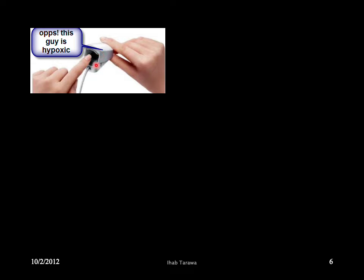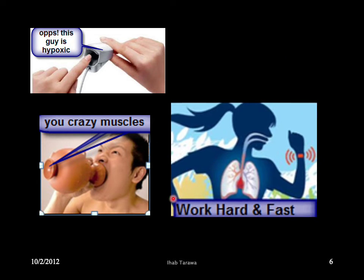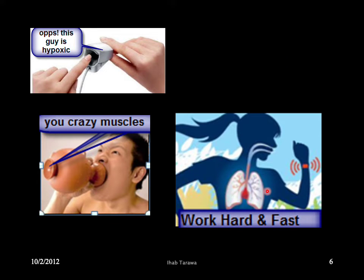One of the ways we monitor is to put a pulse oximeter. So whenever there is hypoxia, the sensor will go off — signaling that this patient is hypoxic. This signal goes to the brain, to the respiratory center, and the signal comes back to the muscles, telling them to work harder and faster.